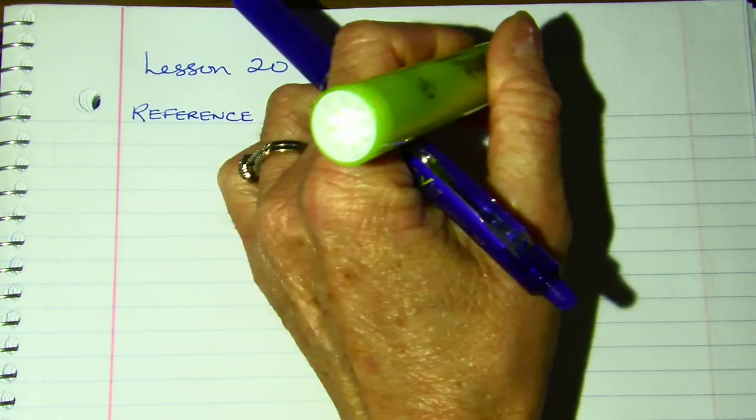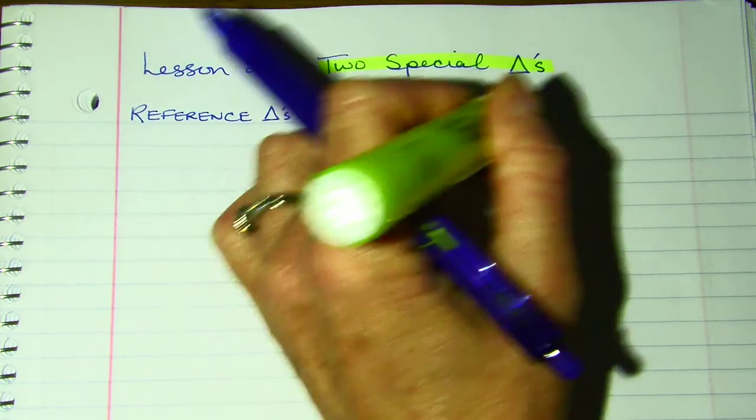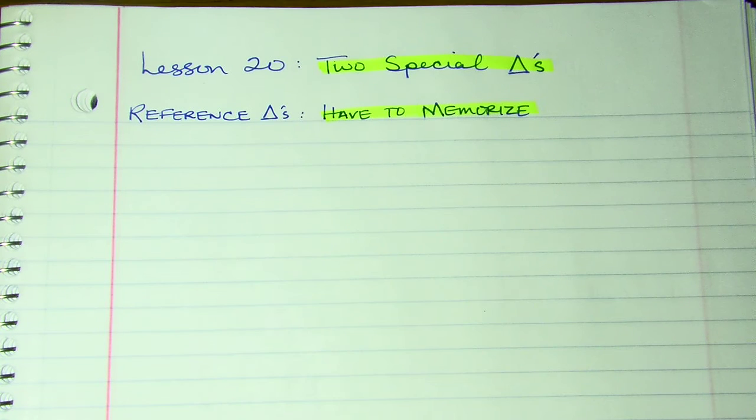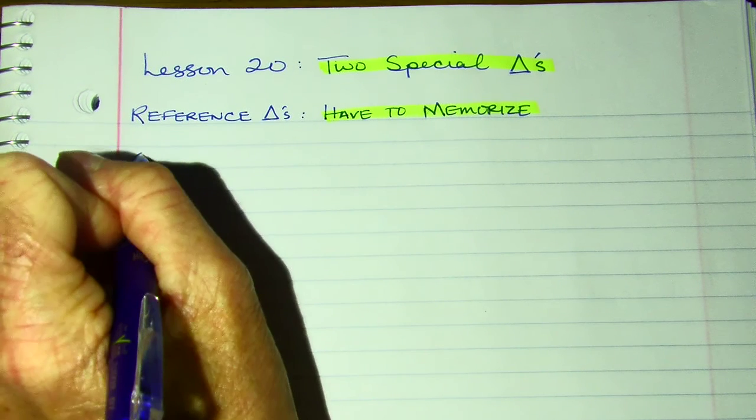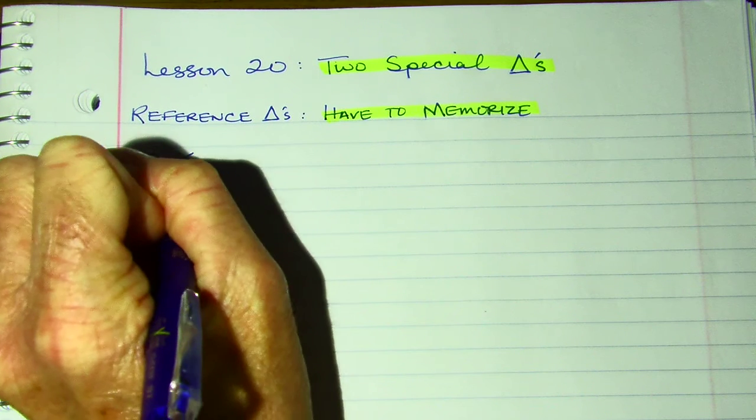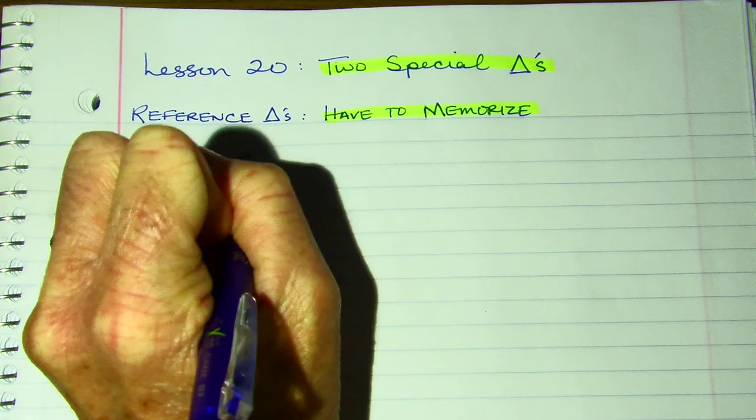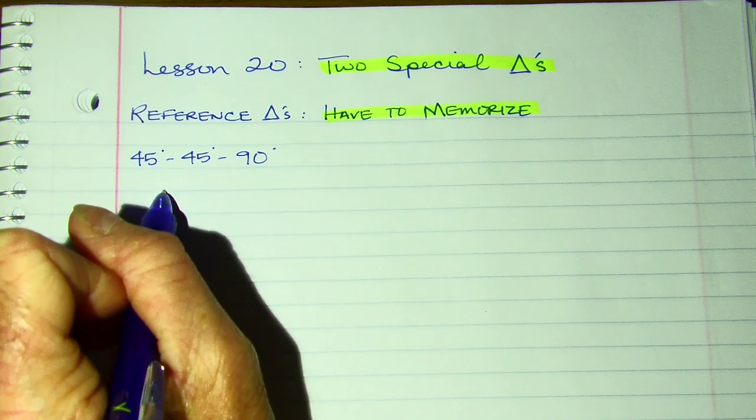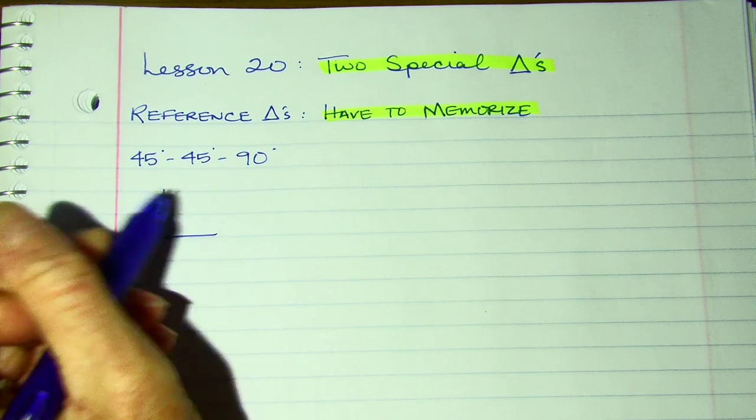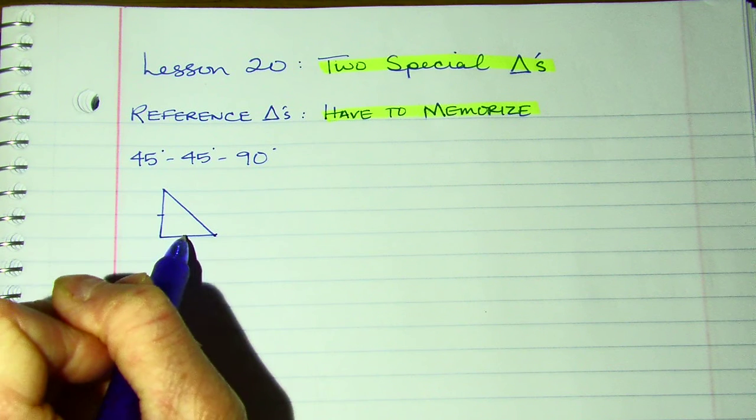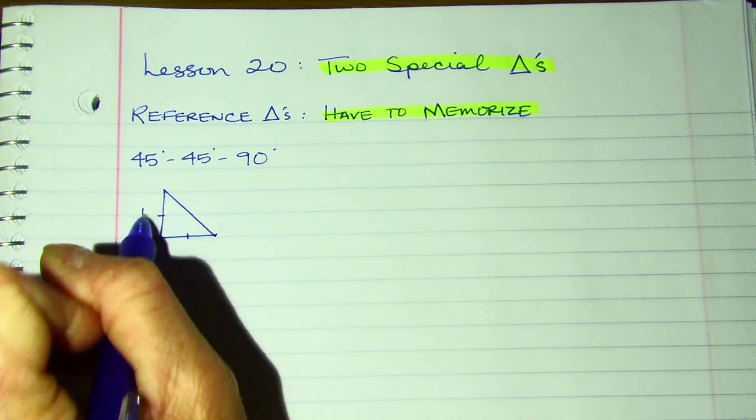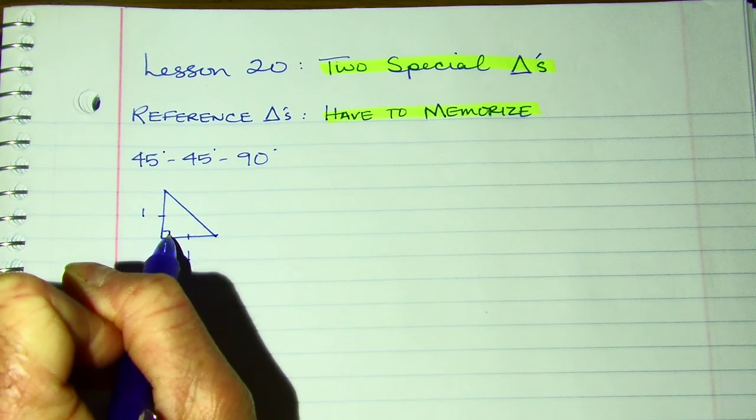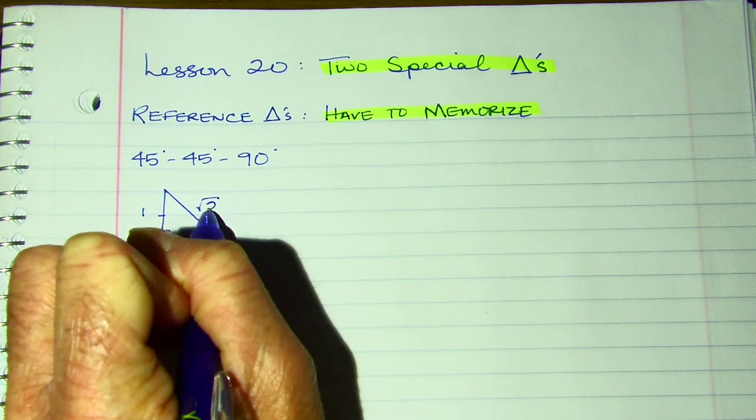We learned those special triangles in Algebra 1, but you are going to have to memorize them. And so there are two triangles. One special is your 45-45-90, and if it helps, always draw a picture. So I'm going to, a 45-45-90 has two legs that are the same. So these are both 1, 1, and this is square root 2.